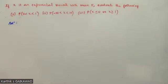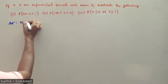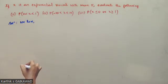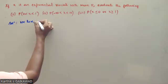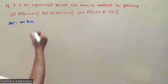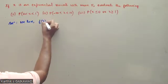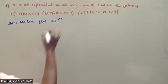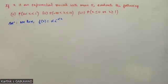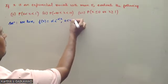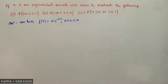First, we have the exponential probability distribution. f(x) equals alpha e to the power minus alpha x, for x from 0 to infinity.